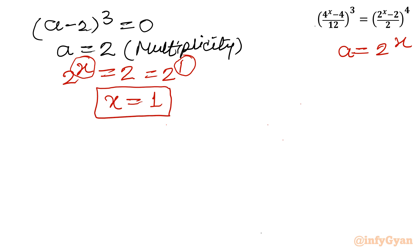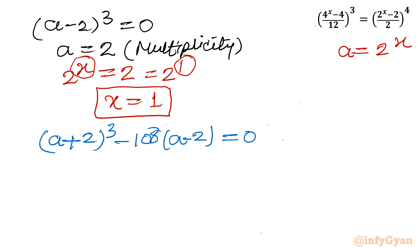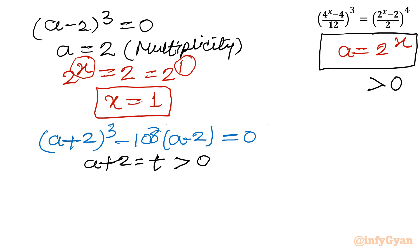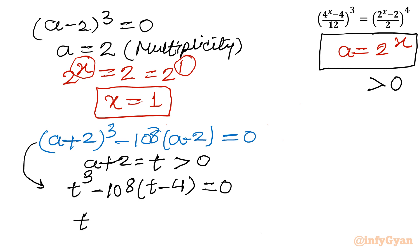Now for the second equation: (a + 2)^3 - 108(a - 2) = 0. Let us use another substitution: let t = a + 2. Since a is positive, t is also always positive. Substituting, this becomes t³ - 108(t - 4) = 0, which gives the cubic equation t³ - 108t + 432 = 0.